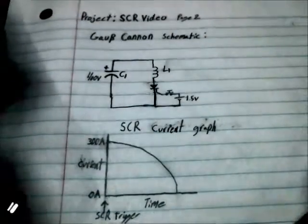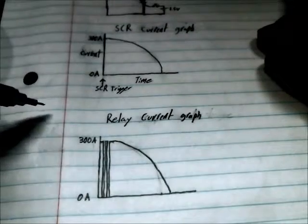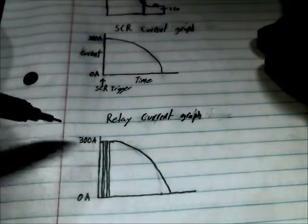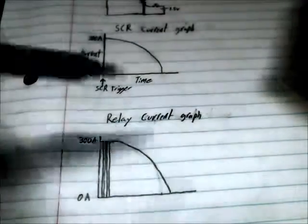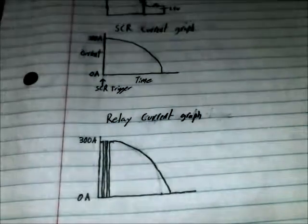Now if you were to use a relay, the issue with using a relay instead of the SCR is the switch bounce, so you would have current interrupt. Therefore the projectile's timing would be off.